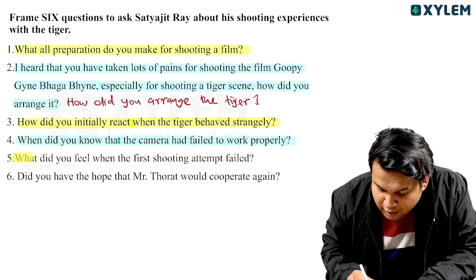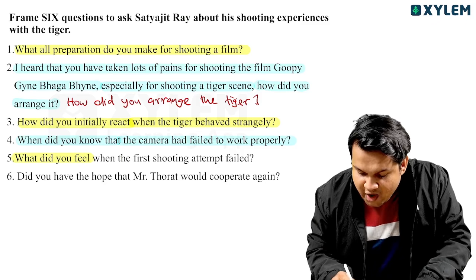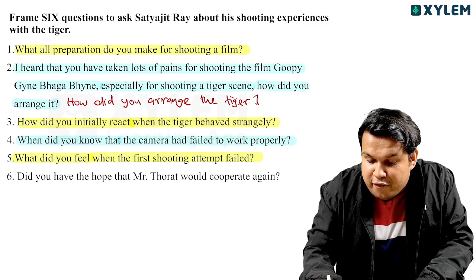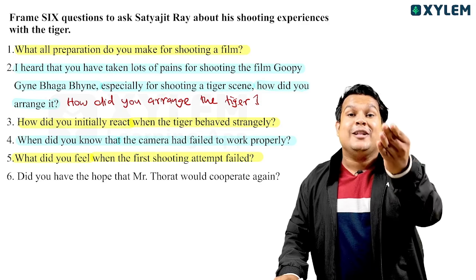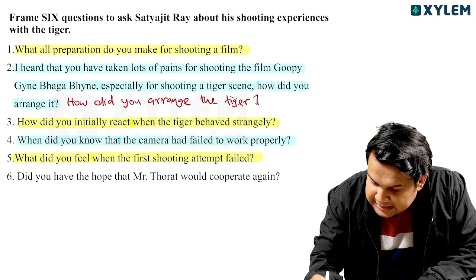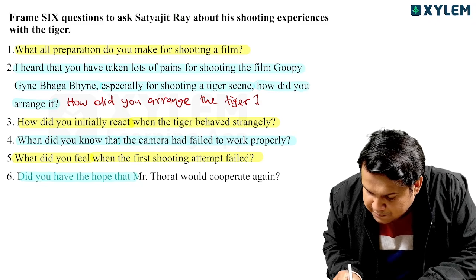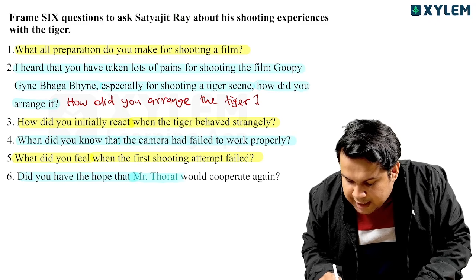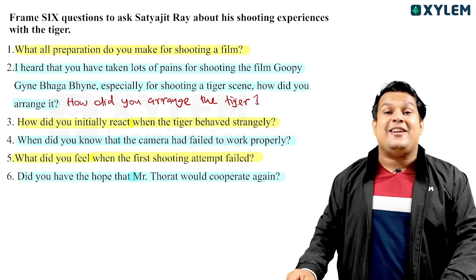Question number five: What did you feel when the first shooting attempt failed? Question number six: Did you have the hope — did you have a prediction — that Mr. Thorat would cooperate again?